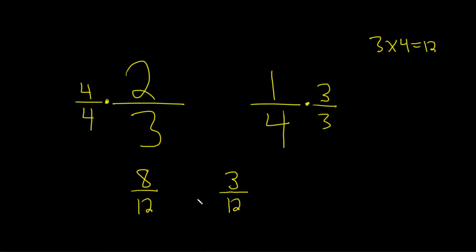Now these are called like fractions because the denominators are the same. And when you're comparing like fractions, all you have to do is compare the numerator. So 8 is bigger than 3, so this fraction on the left is bigger than this fraction here on the right. So 8 over 12 is greater than 3 over 12. And the greater than would be the correct answer.